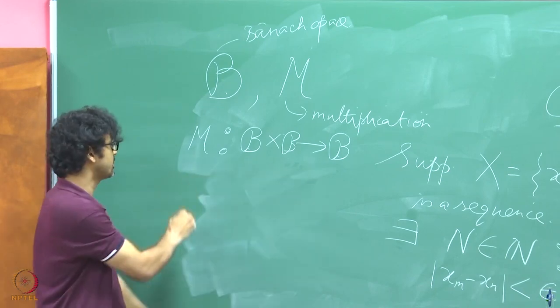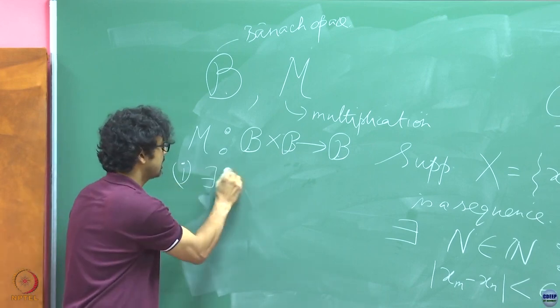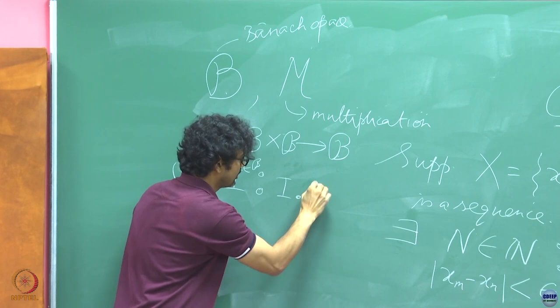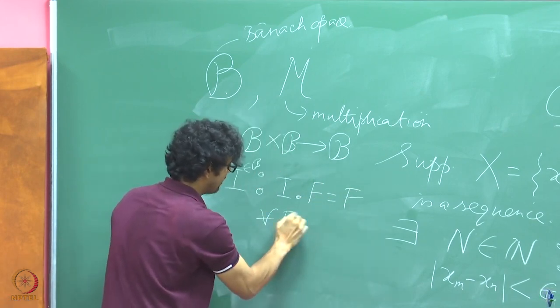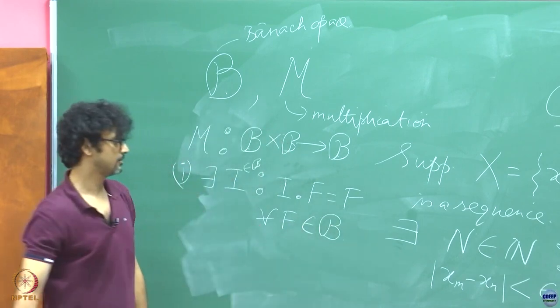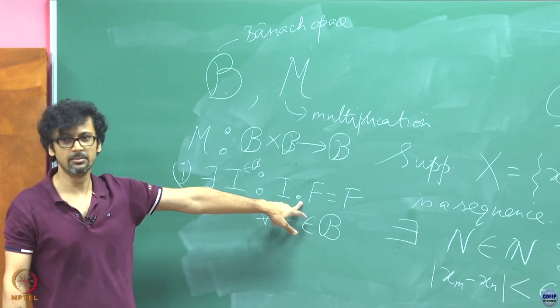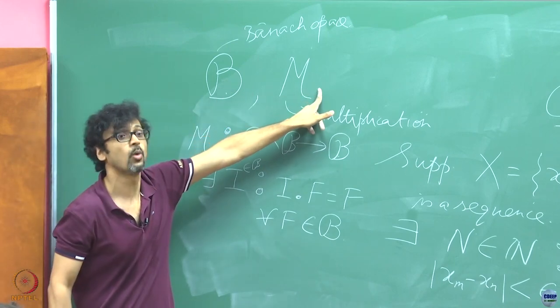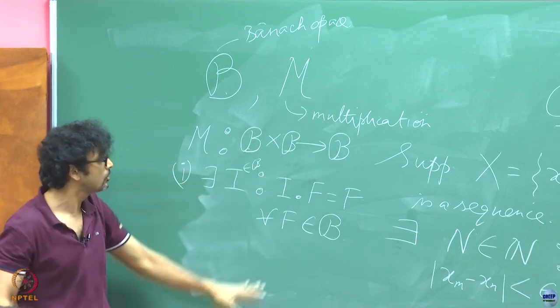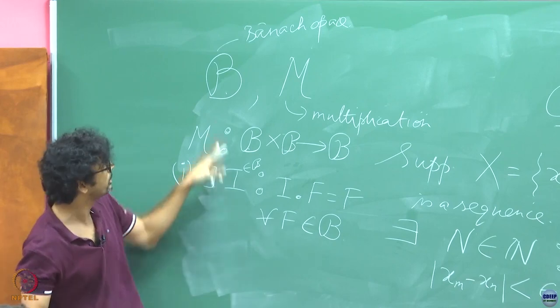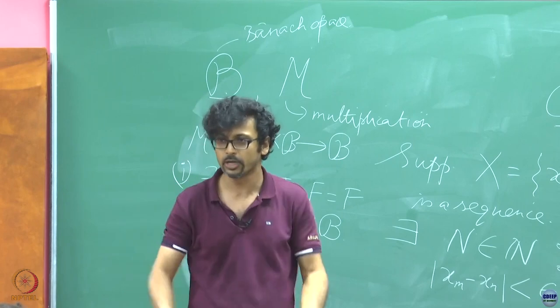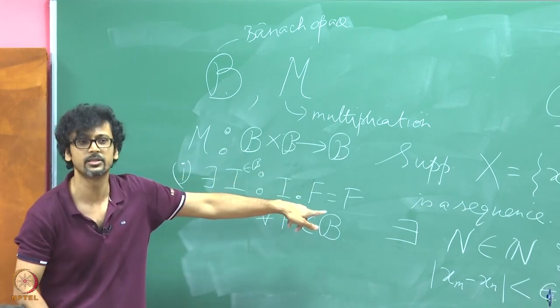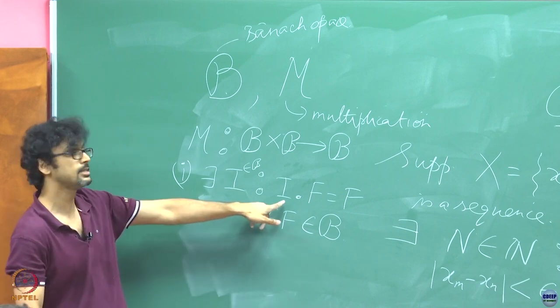Now this multiplication operation satisfies the following property. One, there exists an identity of course in the Banach space such that I operated with F is equal to F for all F in the Banach space. So there is an identity element in this Banach space. So in order for this Banach space along with this multiplication operation to qualify as a Banach algebra, these are the rule basis. The first rule that you must have an identity element identified corresponding to the multiplication. Otherwise, tomorrow you can call some operation a multiplication and give it your name and say, oh this is a Banach algebra. But I will ask you to prove, hang on, what is the identity element with respect to this operation that you have named after yourself?